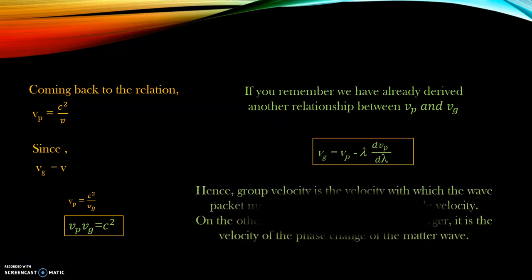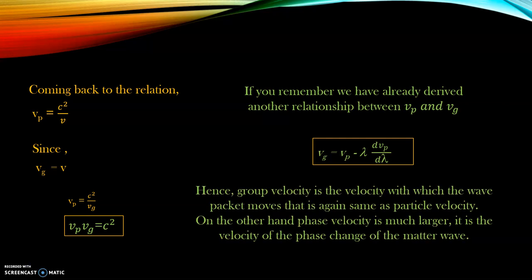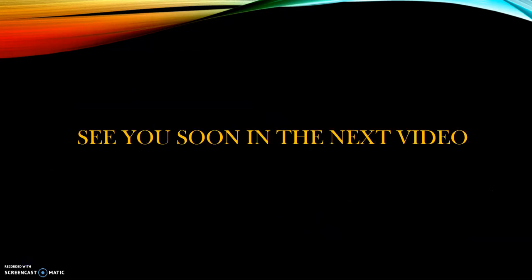Summarizing the entire presentation, we have talked about group velocity, phase velocity, and the velocity of the particle, and the relation between all of these. Group velocity is the velocity with which the wave packet moves and that is exactly equal to the particle's own velocity. However, phase velocity is much larger and it is the velocity of the phase change of the matter wave. That's all for today. See you soon in the next video.